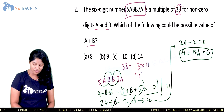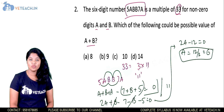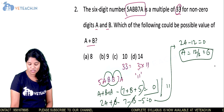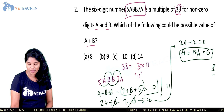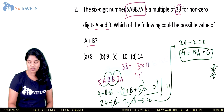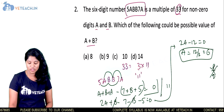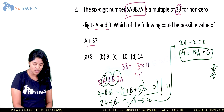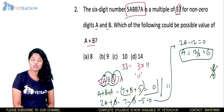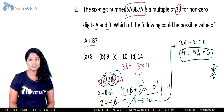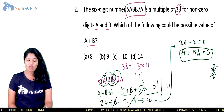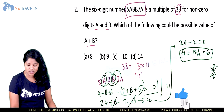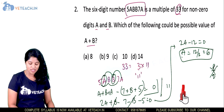If we equate the expression to 11 we get a non-integer value. Since a must be a natural number, we discard that case. So a equals 6 is our answer from the divisibility by 11 condition.